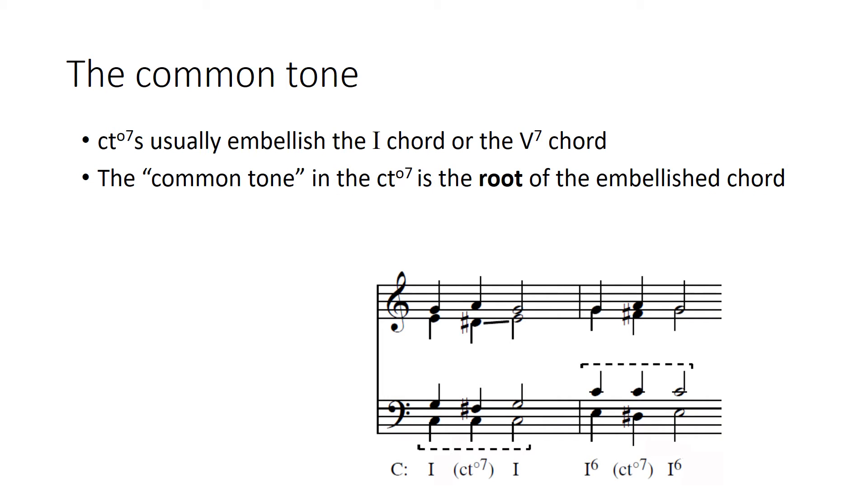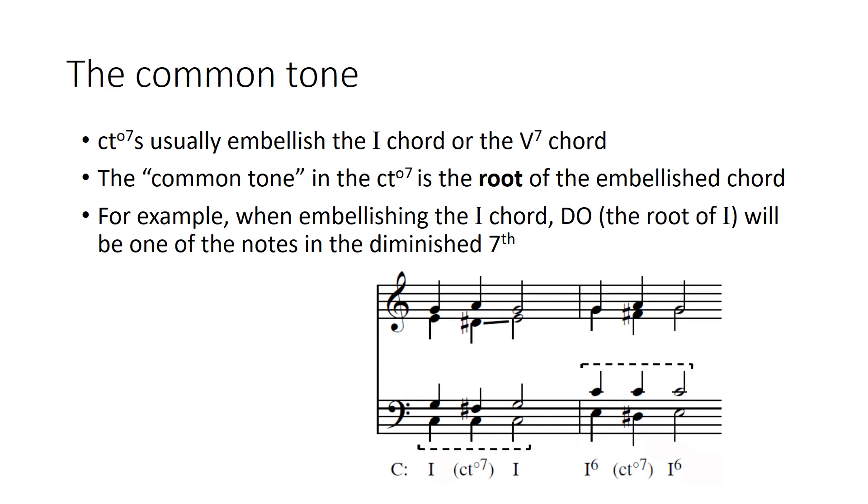The common tone in the common tone diminished seventh is the root of the embellished chord. So let's look at this example down here. First, notice that when we're embellishing the I chord, the root of the chord we're embellishing is do. So the thing I've bracketed here in the example shows that that's kept as a common tone in the diminished seventh chord.